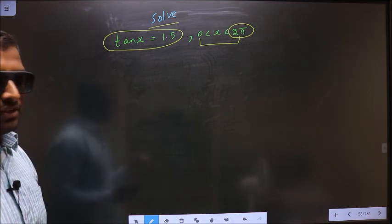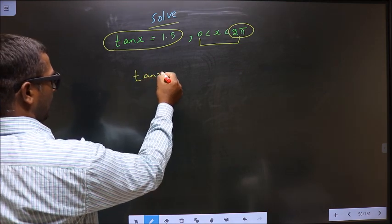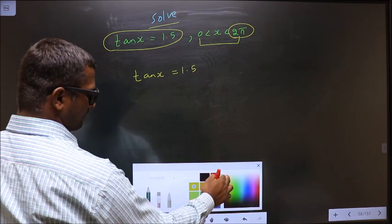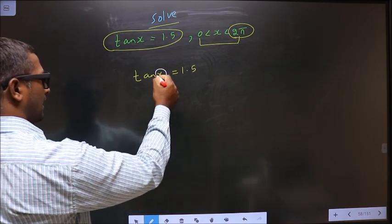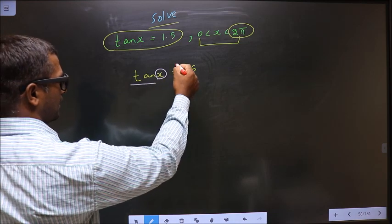Now the given equation is tan x equals 1.5. To get the values for x, here you have tan and it is positive.